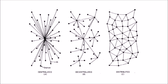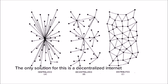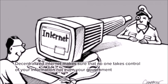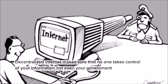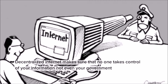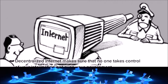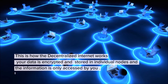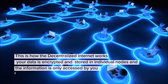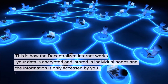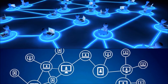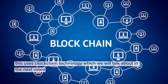The only solution for this is a decentralized internet. Decentralized internet makes sure that no one takes control of your information — not even your government. This is how the decentralized internet works: your data is encrypted and stored in individual nodes, and the information is only accessed by you.